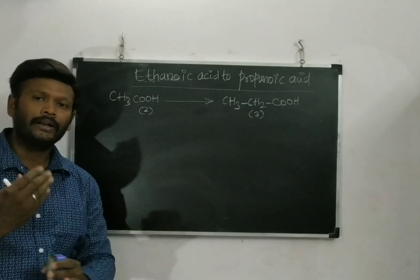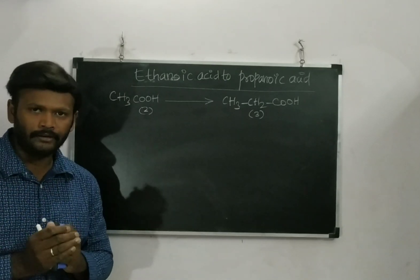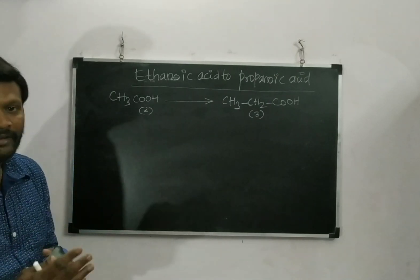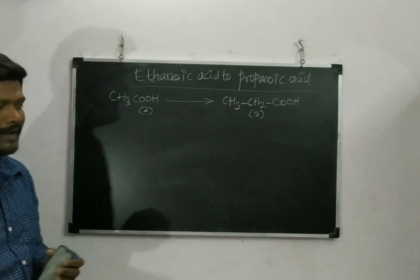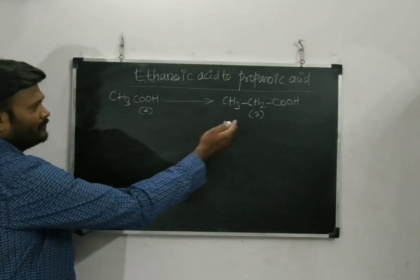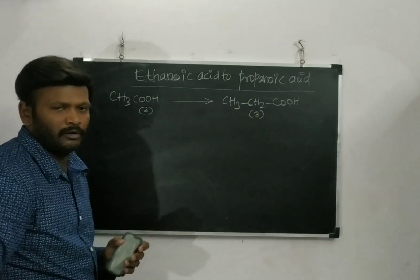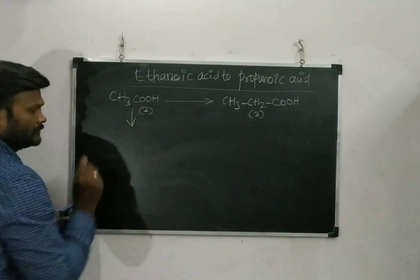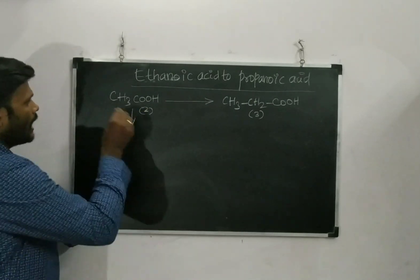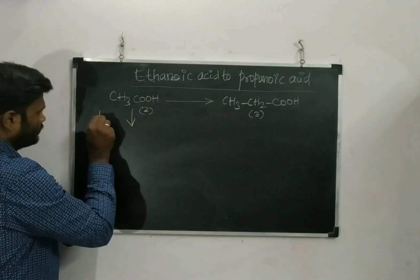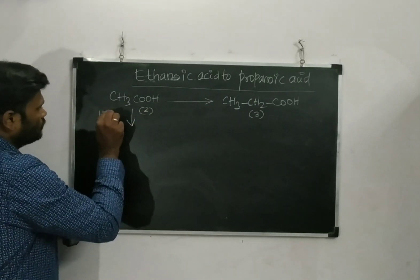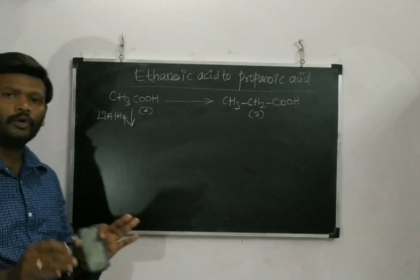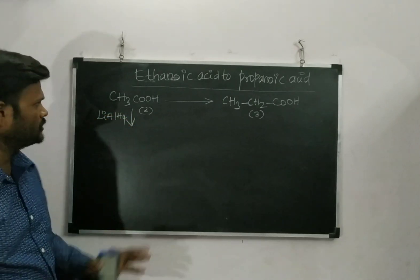So I have to increase one number of carbon atoms. To do that, I need to add KCN. But before that, I need to reduce the acid using lithium aluminium hydride (LiAlH4), which acts as a good reducing agent.